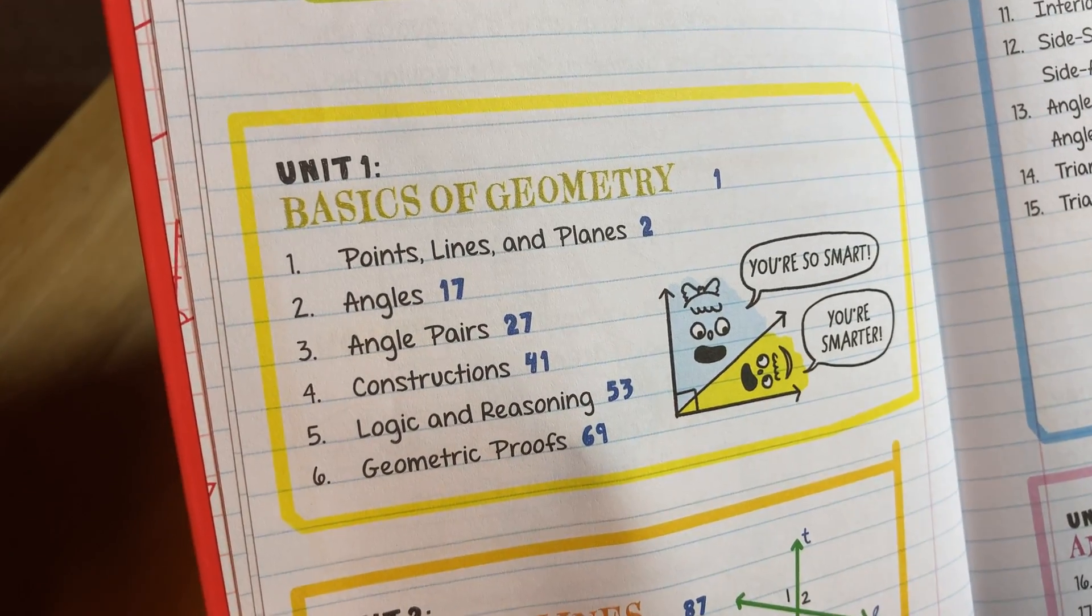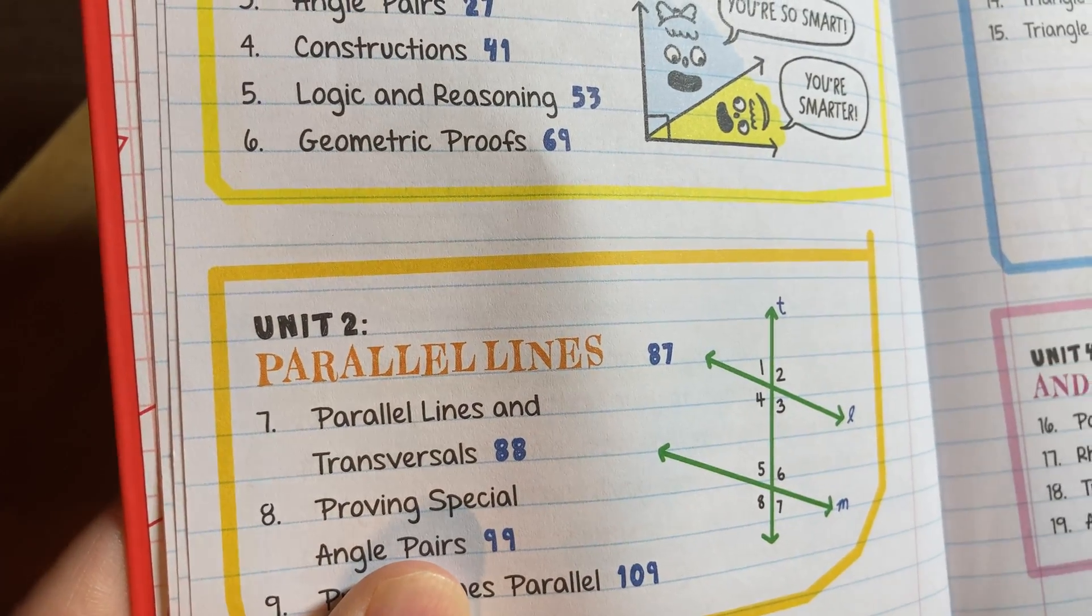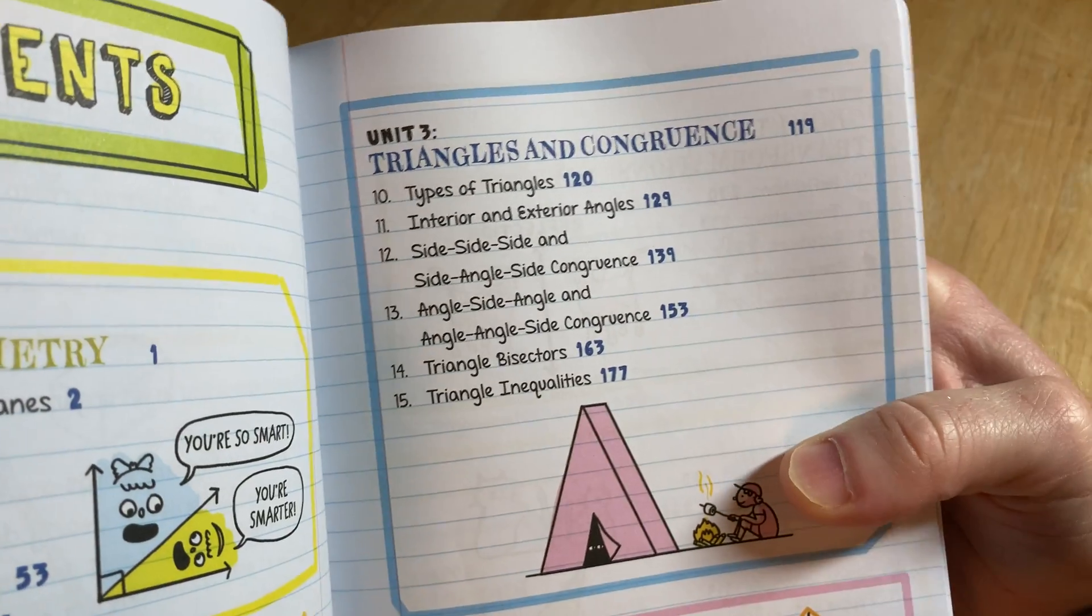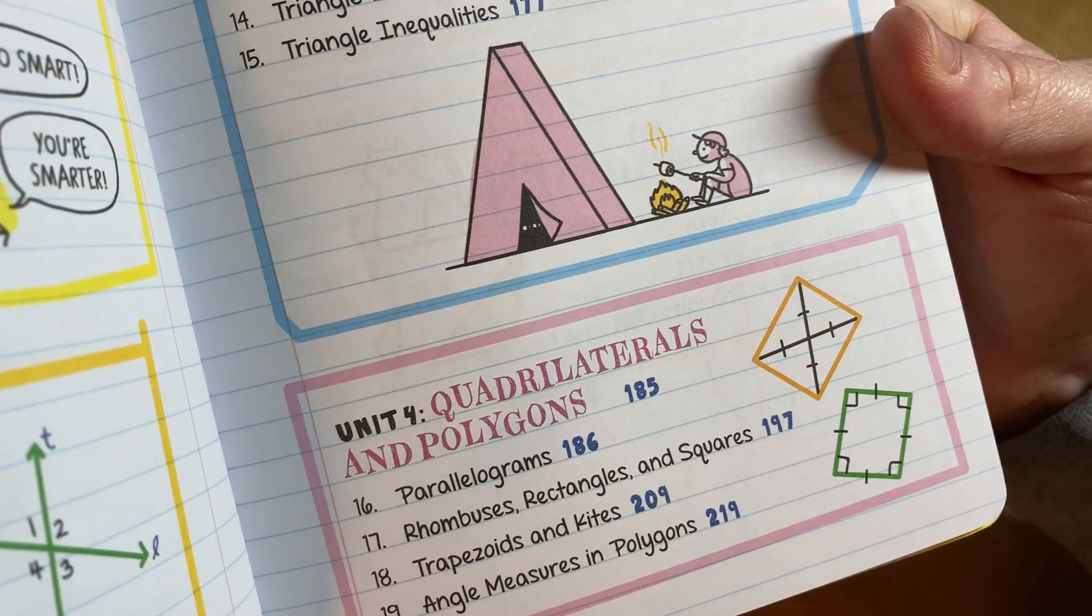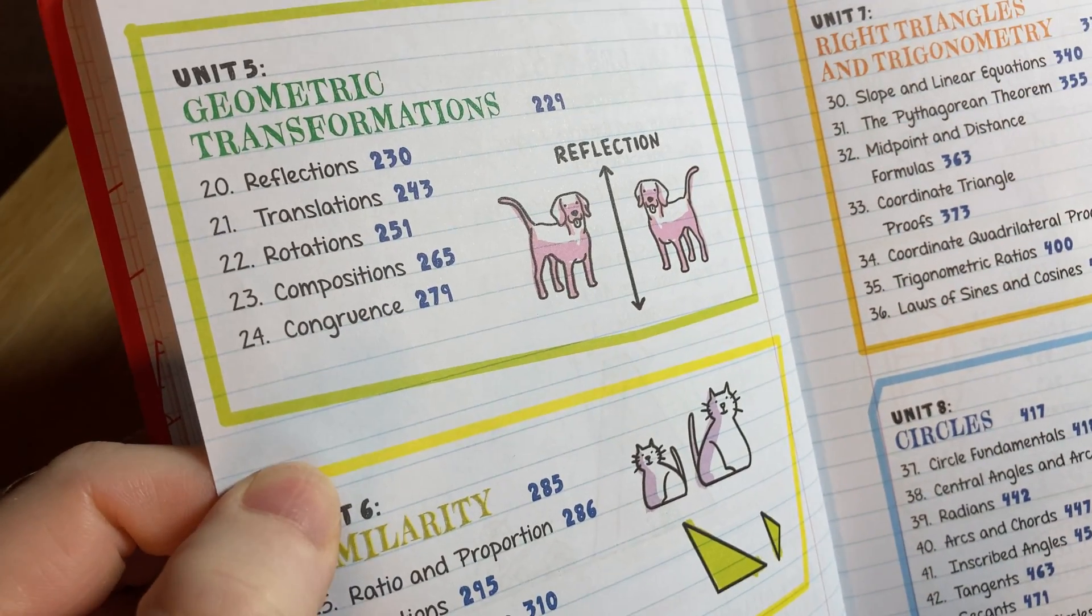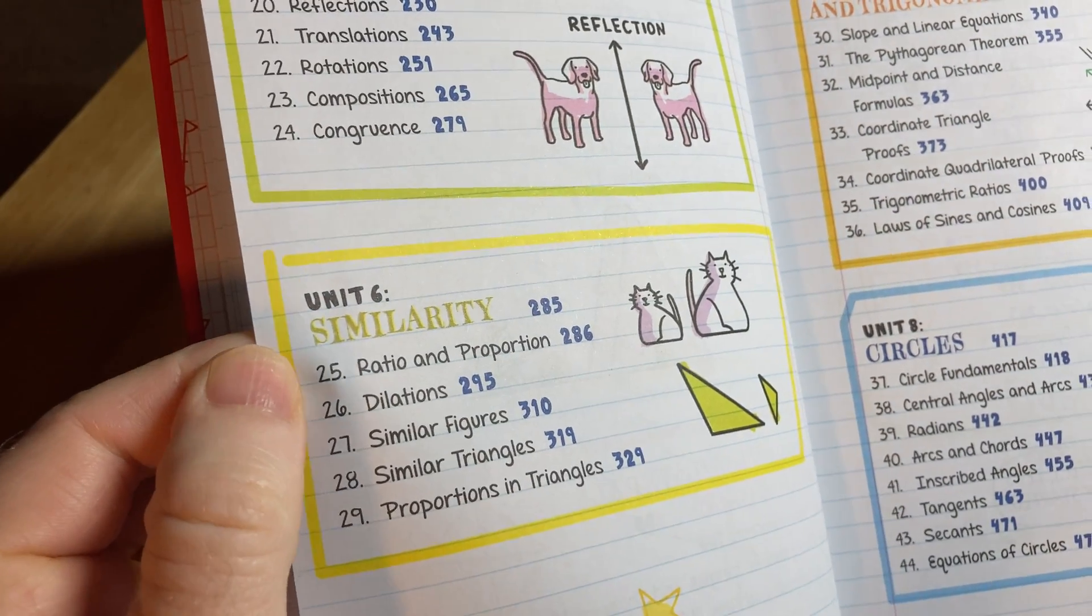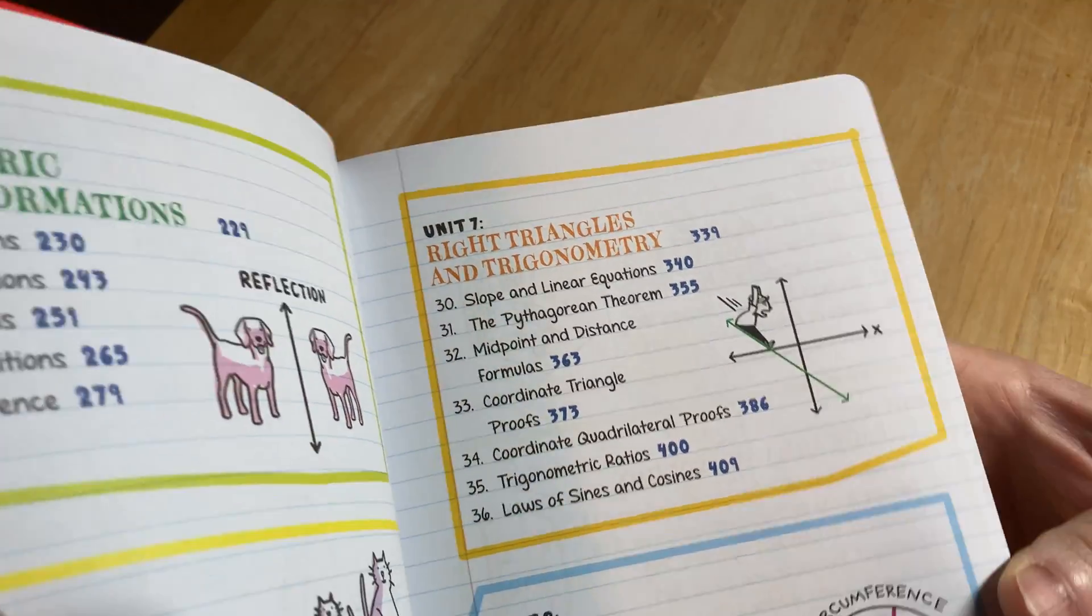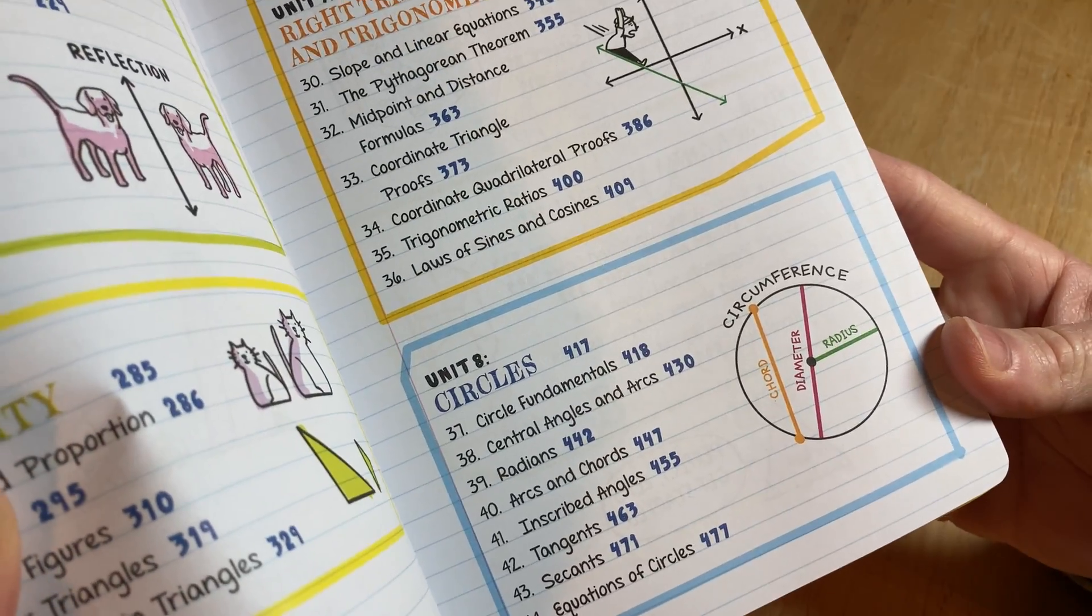So it has basics of geometry, parallel lines, triangles and congruence, quadrilaterals and polygons, geometric transformations, similarity, right triangles and trigonometry, and then circles, area, surfaces, and volume.